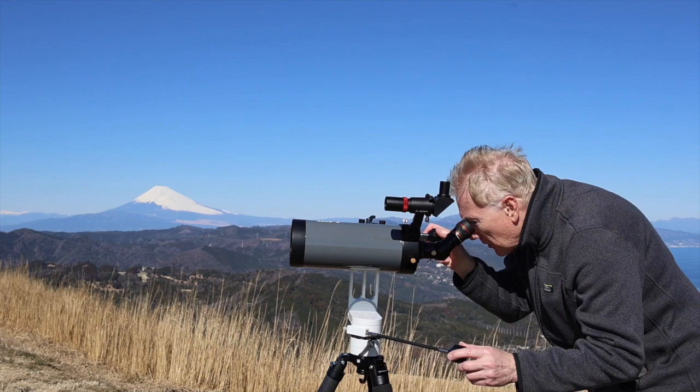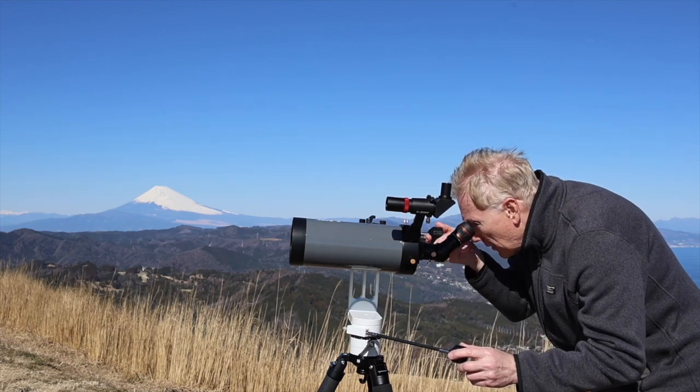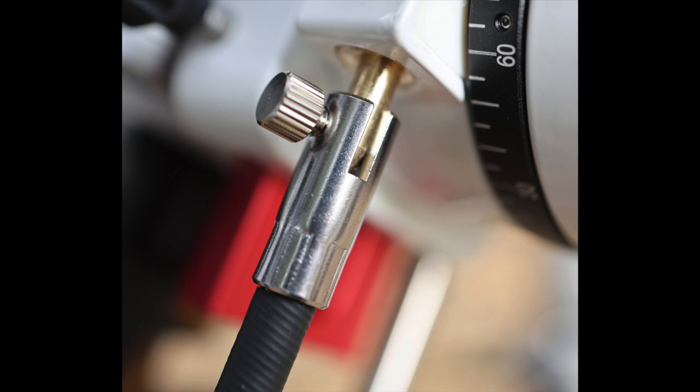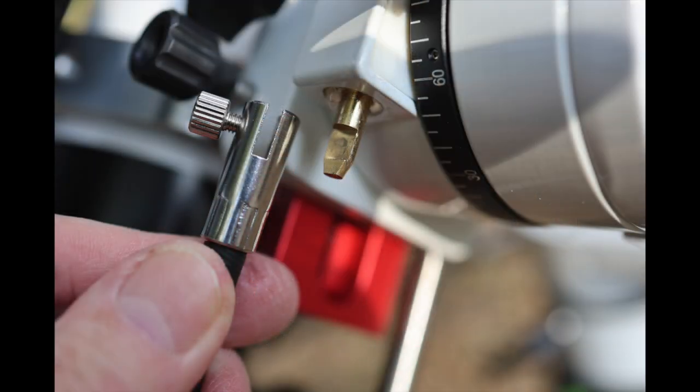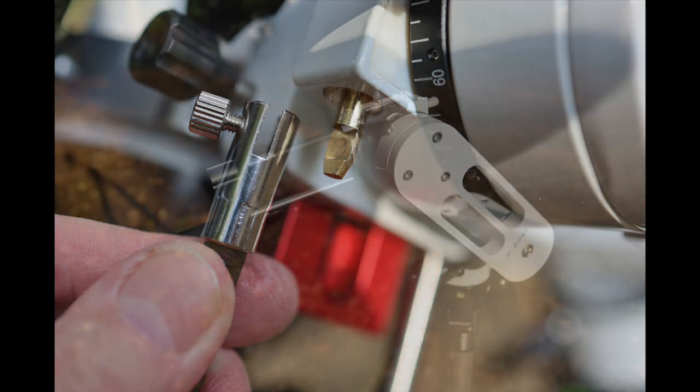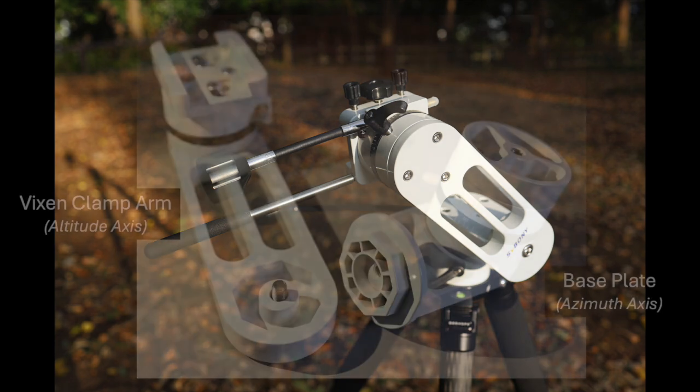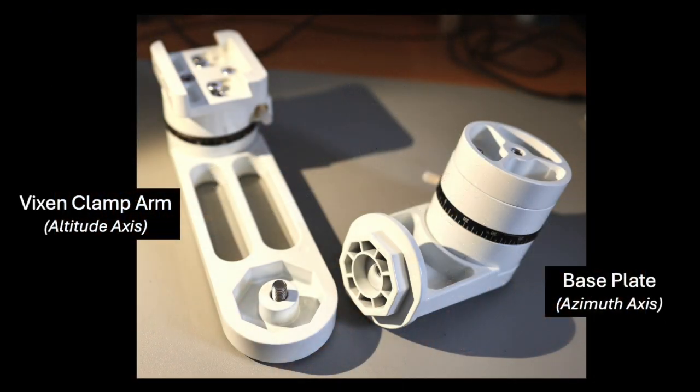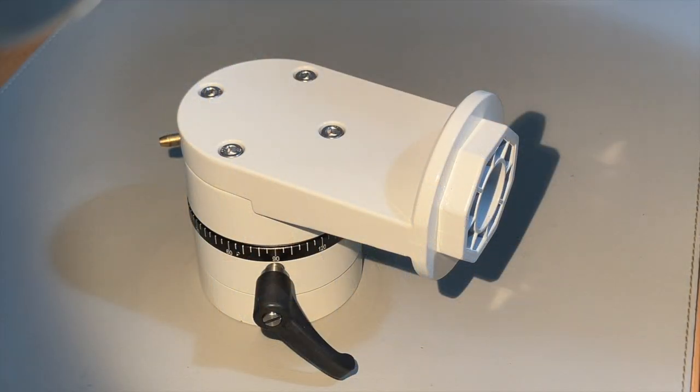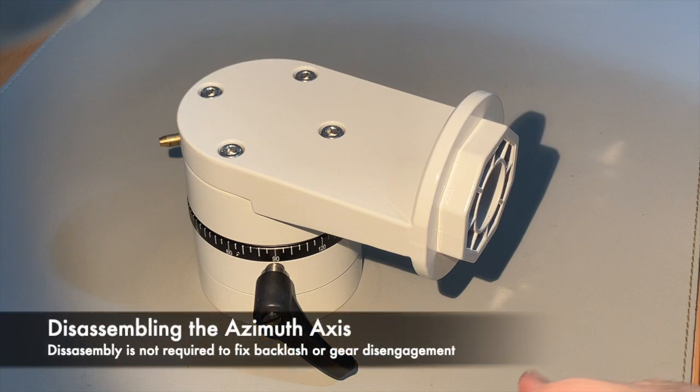But let me emphasize here, you do not have to disassemble the mount to fix the backlash or loss of control problem. You do not have to take it apart. The adjustment screws are on the outside of the mount and accessible with the right tools. However, I thought it might be useful to share with you views of the inside of the mount in video to help you visualize exactly what the adjustments are actually doing.